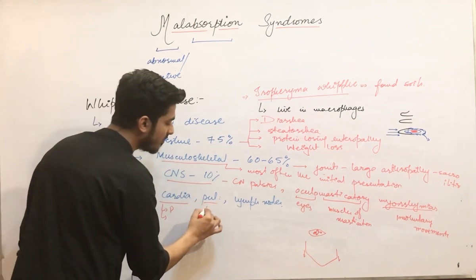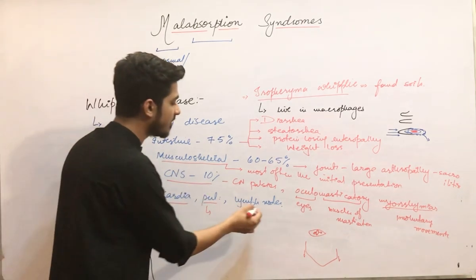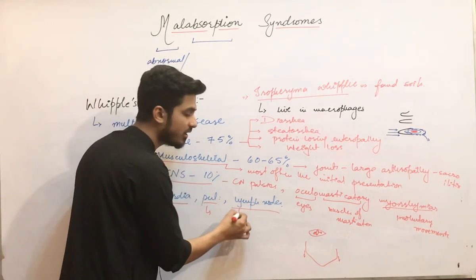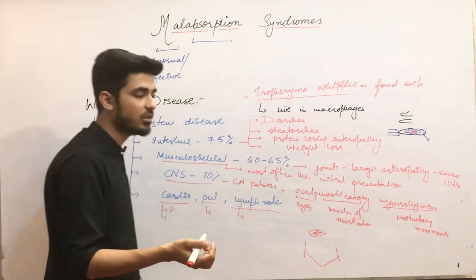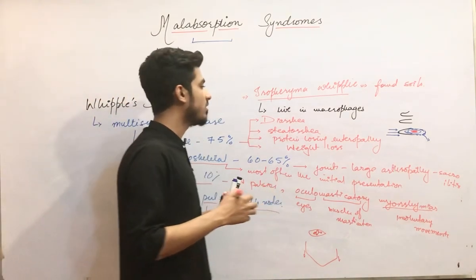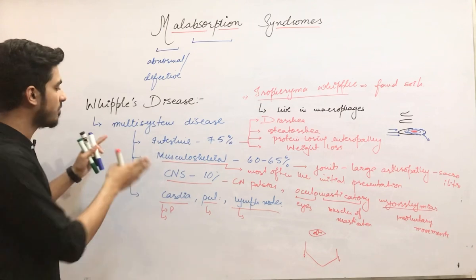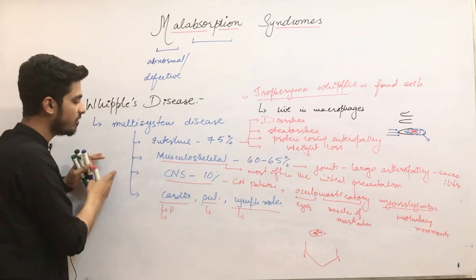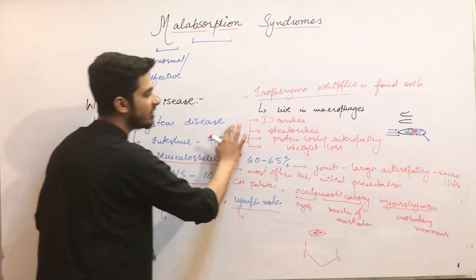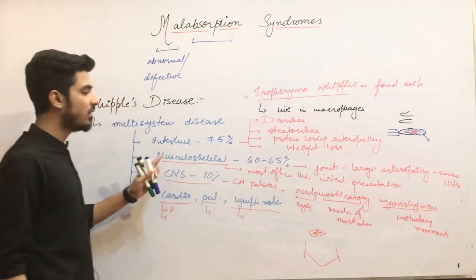There is also cardiac involvement such as pericarditis, myocarditis, and endocarditis. Pulmonary involvement may lead to cough and infiltrates. Lymphadenopathy and fever can also be present. These are the multi-system involvements, but most commonly the intestine, musculoskeletal system, and CNS are affected.